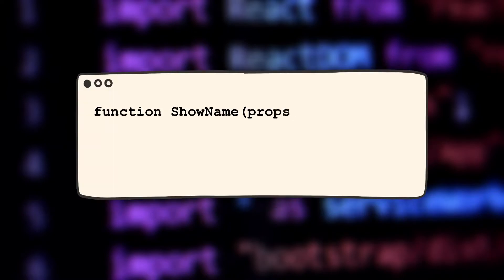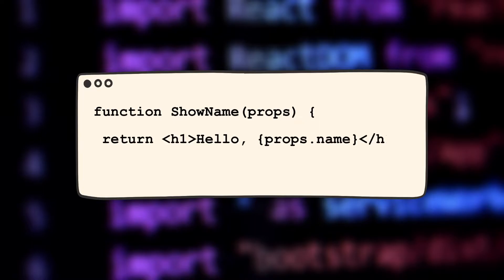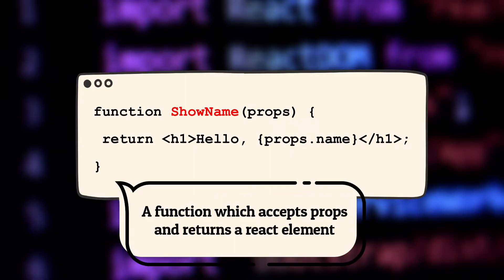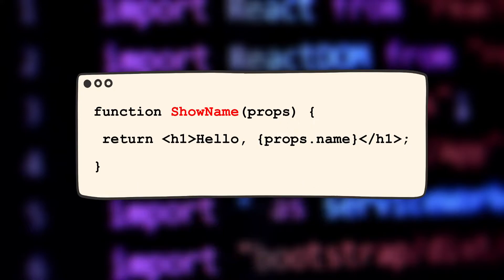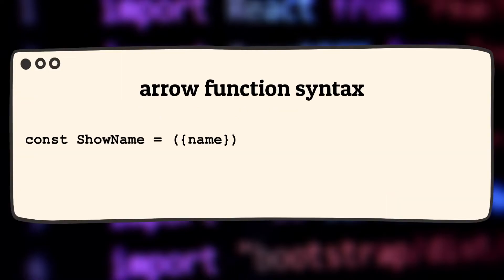It should be something like this inside your React application using just JavaScript and not TypeScript. For example, the function name is ShowName, so it looks something like this. This is just a function which accepts props and returns a React element. Nowadays we also see the arrow function syntax, so this very same component looks something like this.